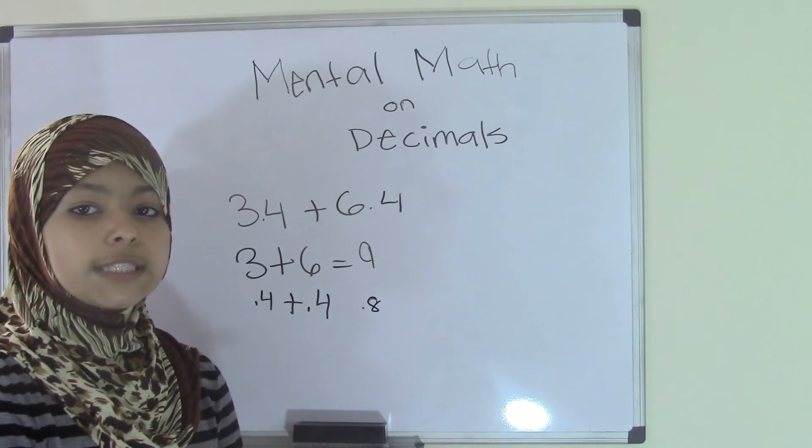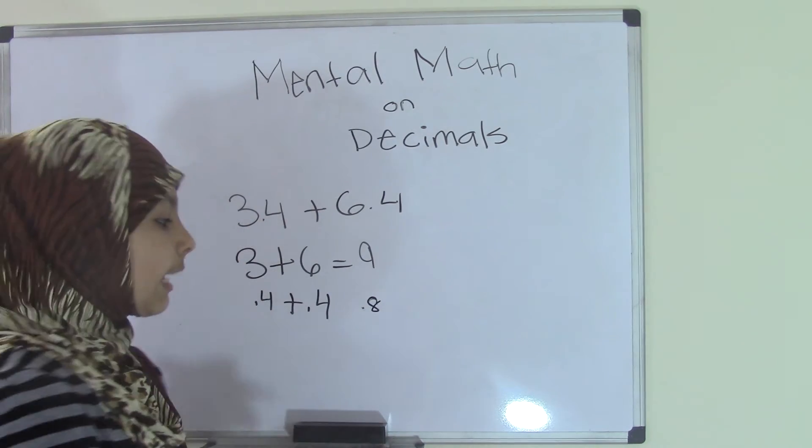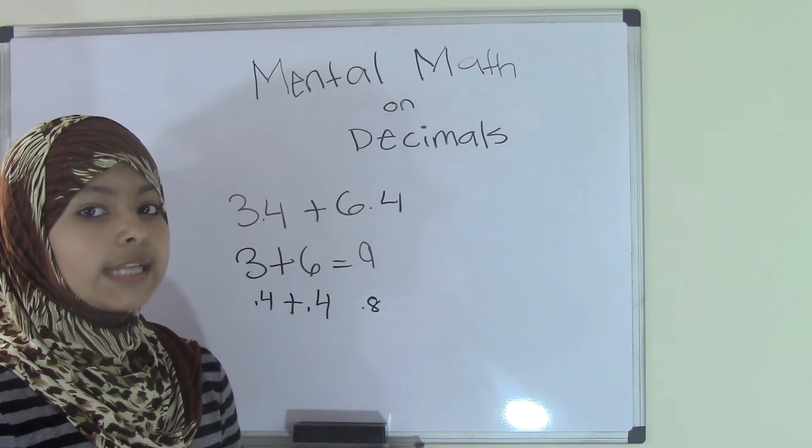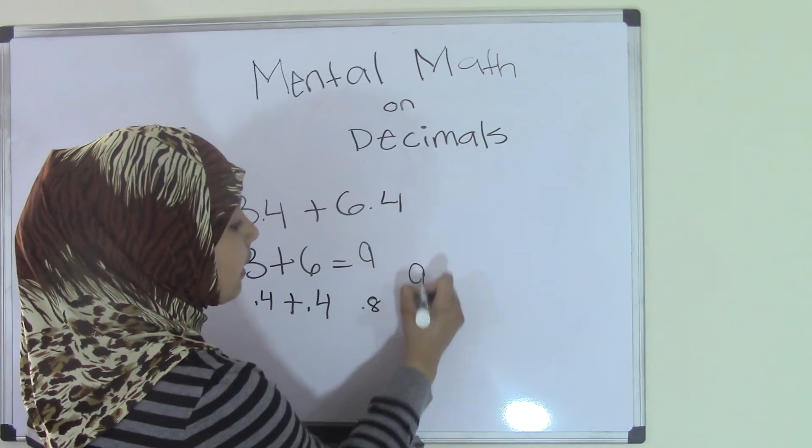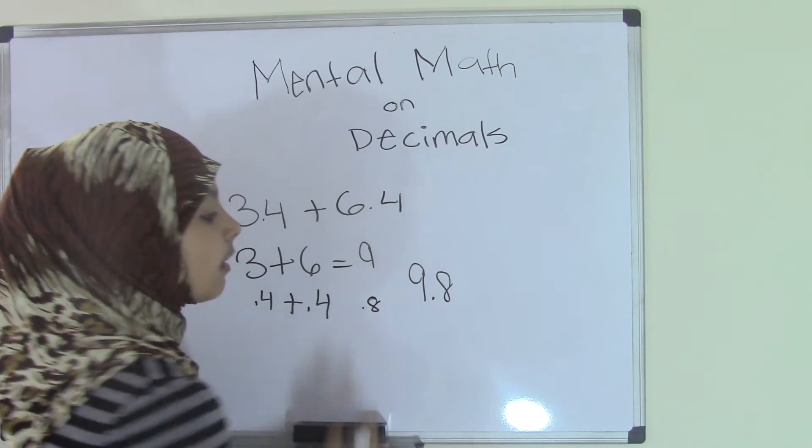Now we just have to add 9 and 0.8. But we do not do that as an actual equation. We will just write that as 9.8. See?